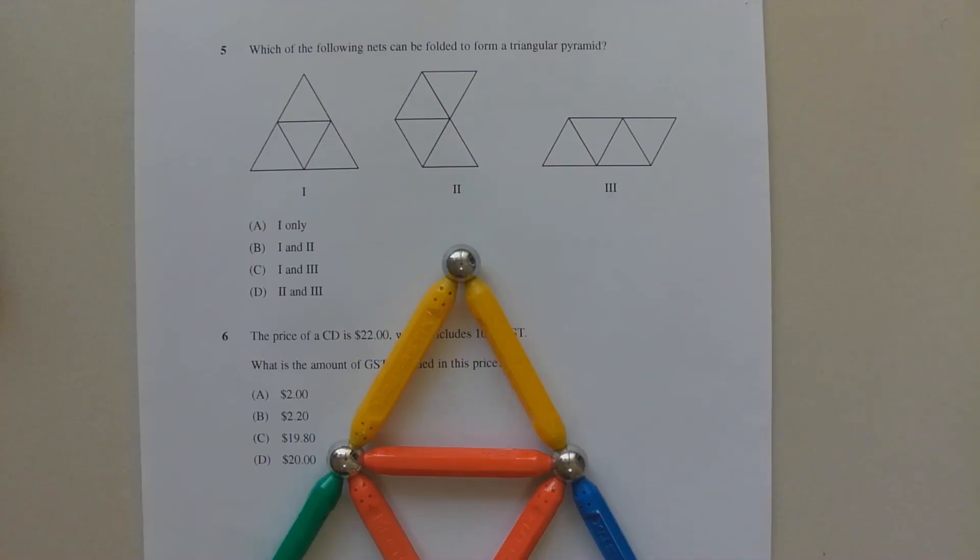The net of a solid shape is the set of two-dimensional shapes that, when connected and folded in a particular way, will form that solid shape. And nets of solid shapes are useful, for example, in finding the surface area of that particular solid shape.